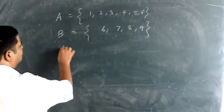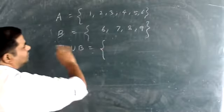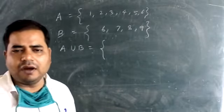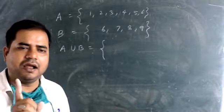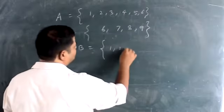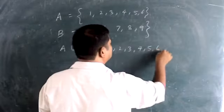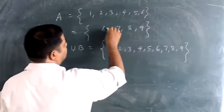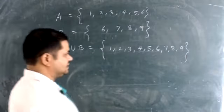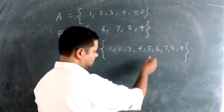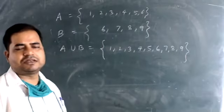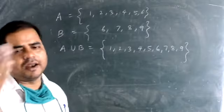So what is A union B? Union means you take all elements of A and B, but common elements are taken only once. So A union B = {1, 2, 3, 4, 5, 6, 7, 8, 9}. Here, 6 is in both A and B but we take it only once. A union B consists of all elements which are either in A or in B.